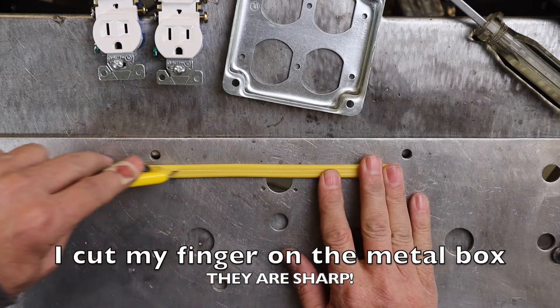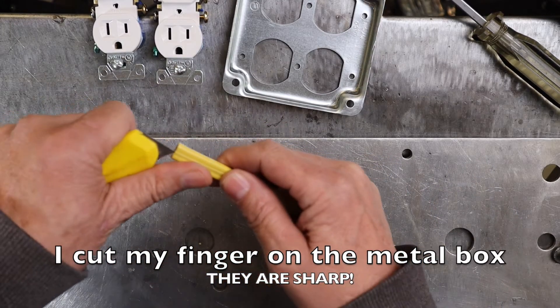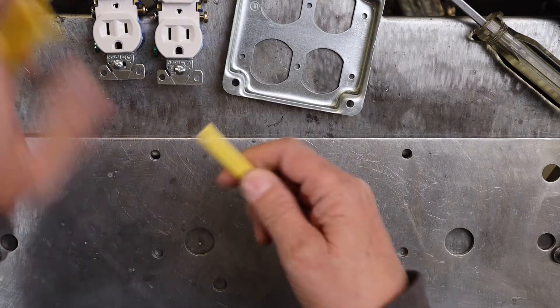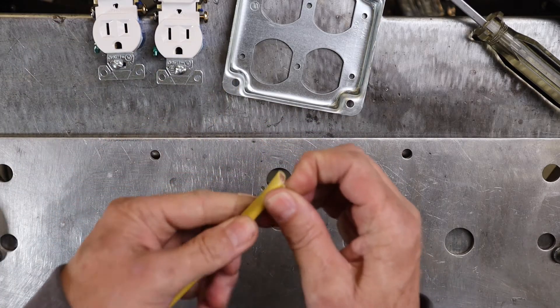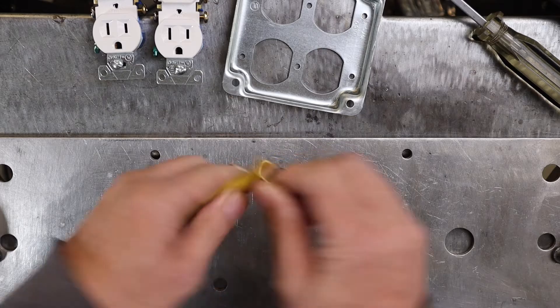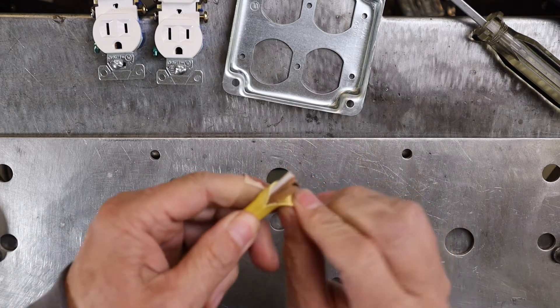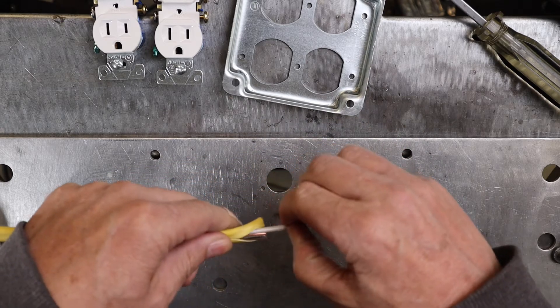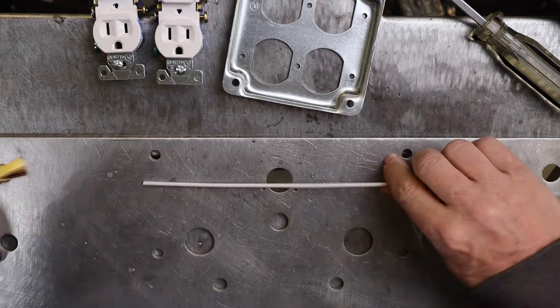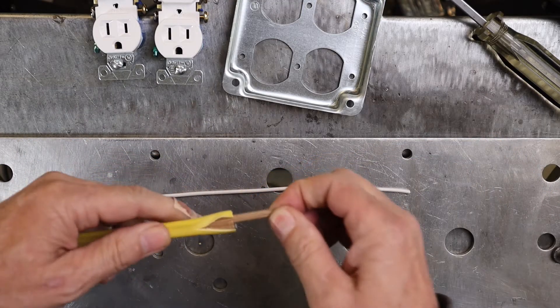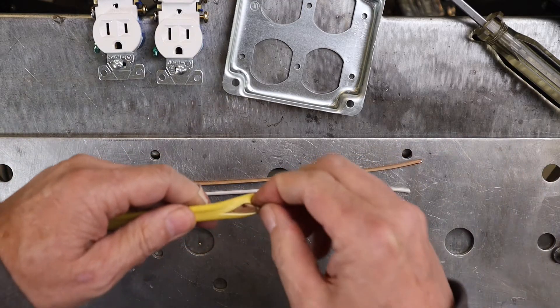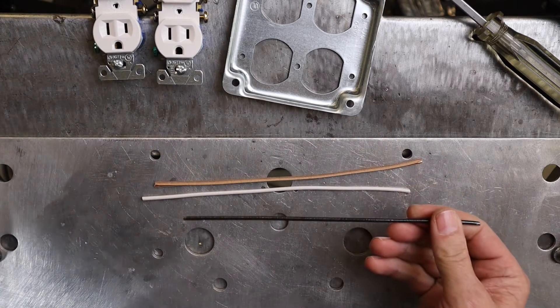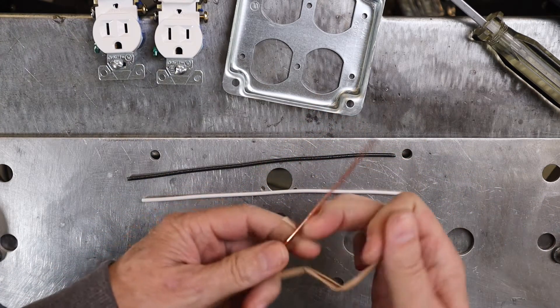So I'm just going to score this, peel off the insulation, the outer insulation, probably just pull them out since it's only a short piece, and you'll get the three wires out of it: white, black, and a solid copper.